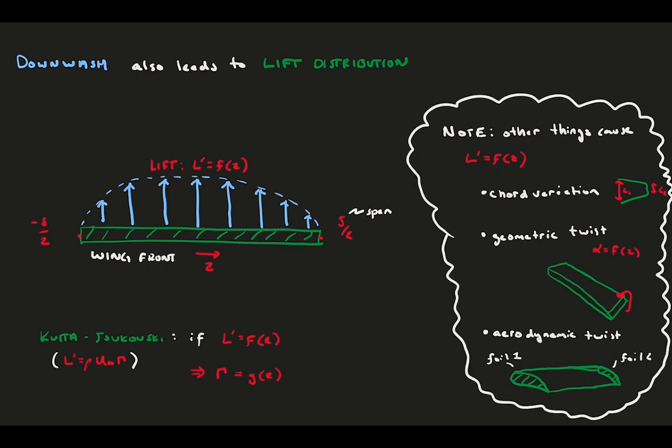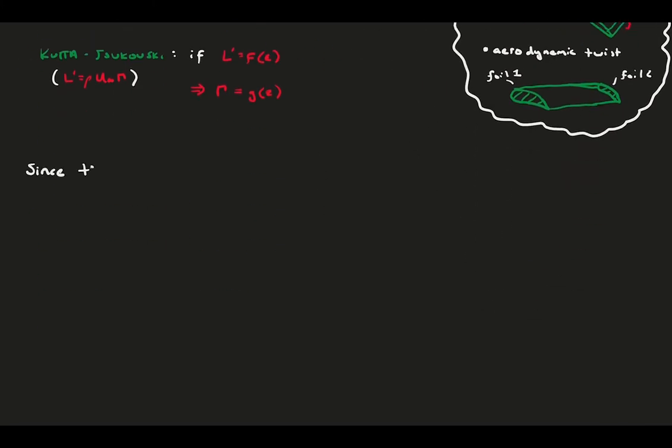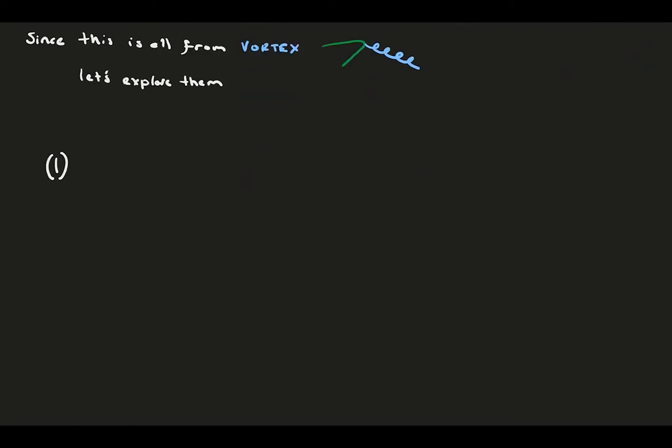Everything in this video so far has been due to one physical phenomena, the tip vortex. The tip vortex represents a straight, semi-infinite vortex, and it will help us to build some tools for aerodynamic analysis of vortices moving forward. For that, we call on the Biot-Savart Law, which will hopefully tell us something about the semi-infinite vortex and its downwash.